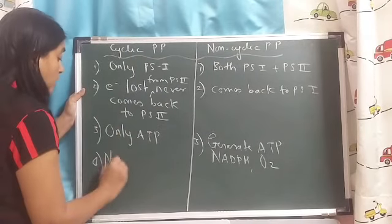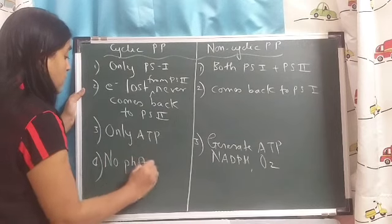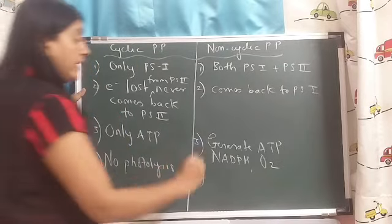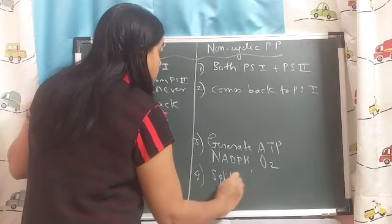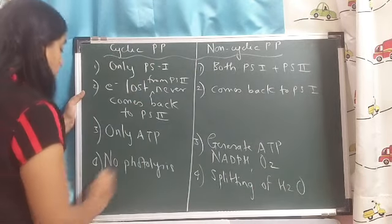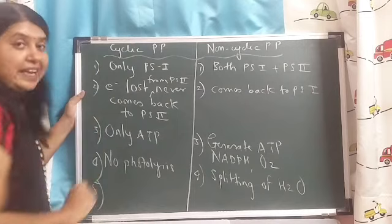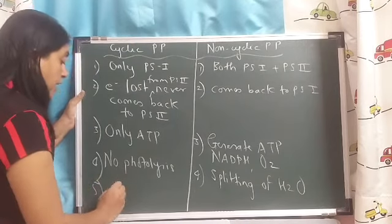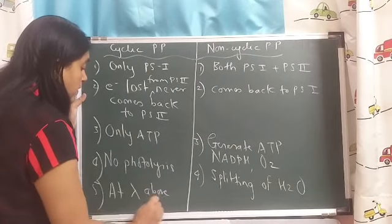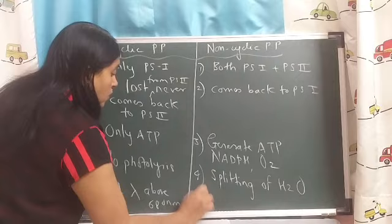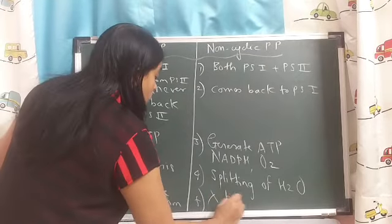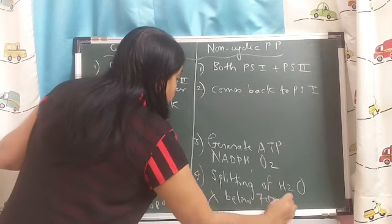In cyclic photophosphorylation, there is no photolysis of water. In case of non-cyclic, there is splitting of water. Cyclic photophosphorylation operates at wavelength above 680 nanometers. Non-cyclic photophosphorylation operates at wavelength below 700 nanometers.